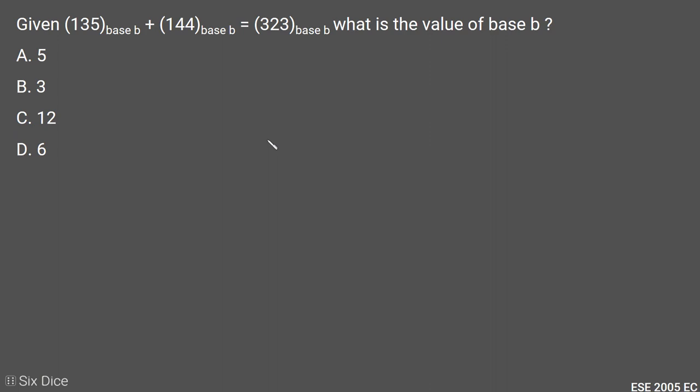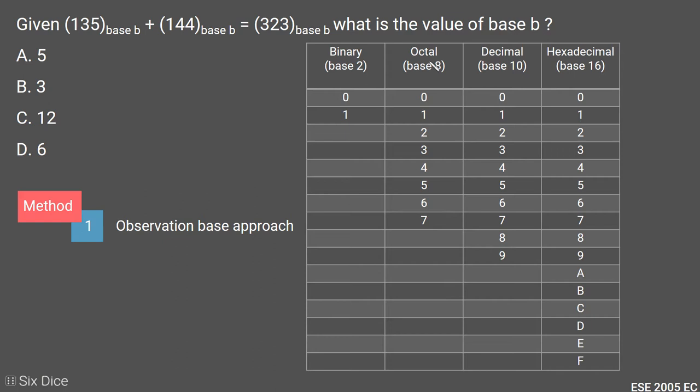If we observe, for binary the maximum value is 1, for octal the maximum value of a digit is 7, for decimal the maximum value of a digit goes up to 9, and for hexadecimal the maximum value of a single digit goes up to F, meaning 15. We can conclude that the maximum value of a bit or digit in a base or radix r is r minus 1.